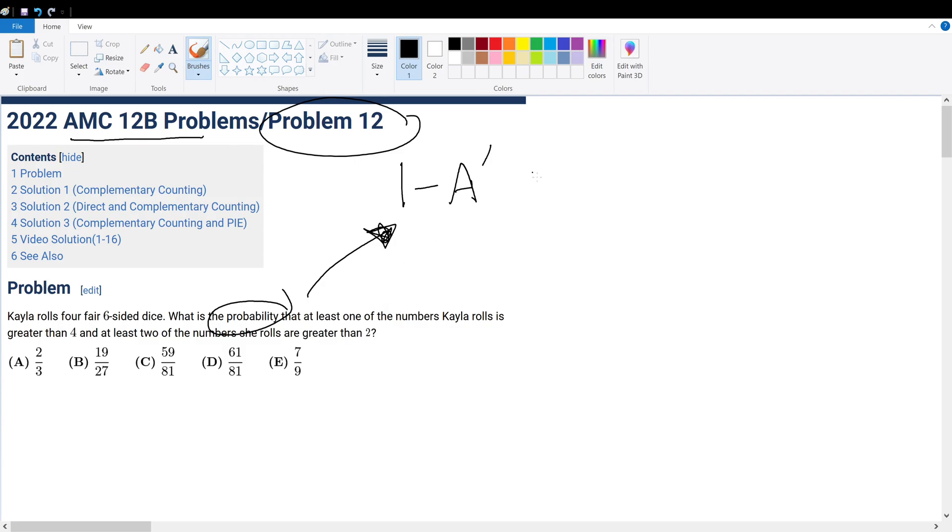Alright, so complementary counting, by the way, if you don't know, is just basically considering cases that don't satisfy the conditions given.